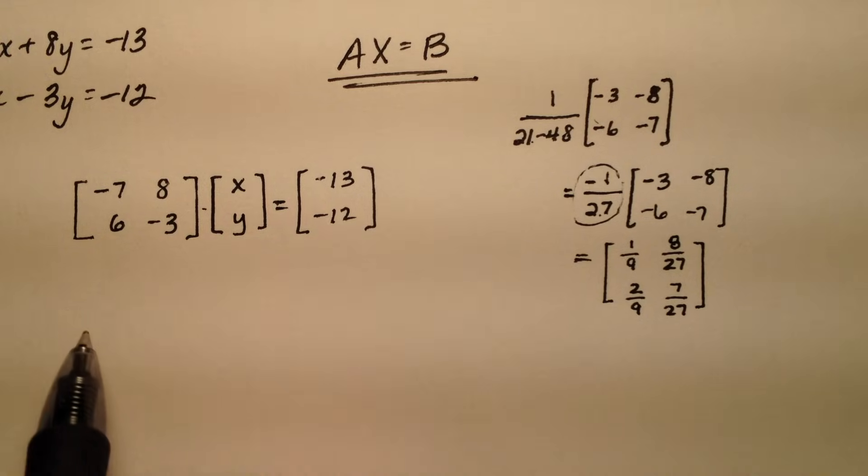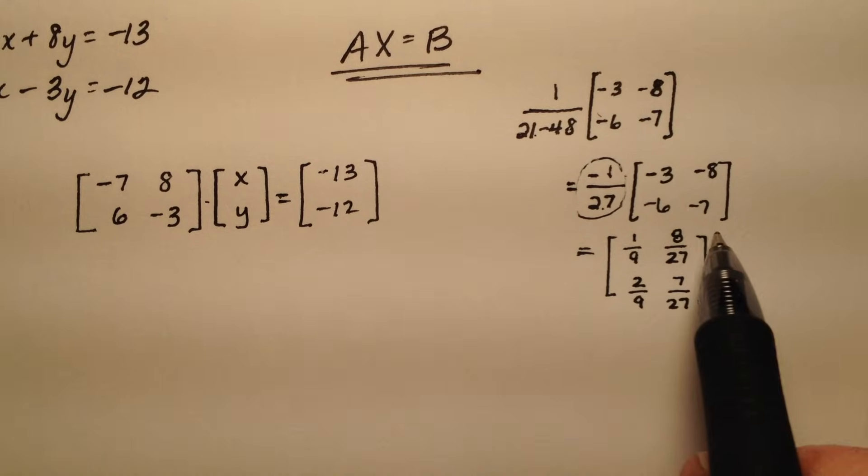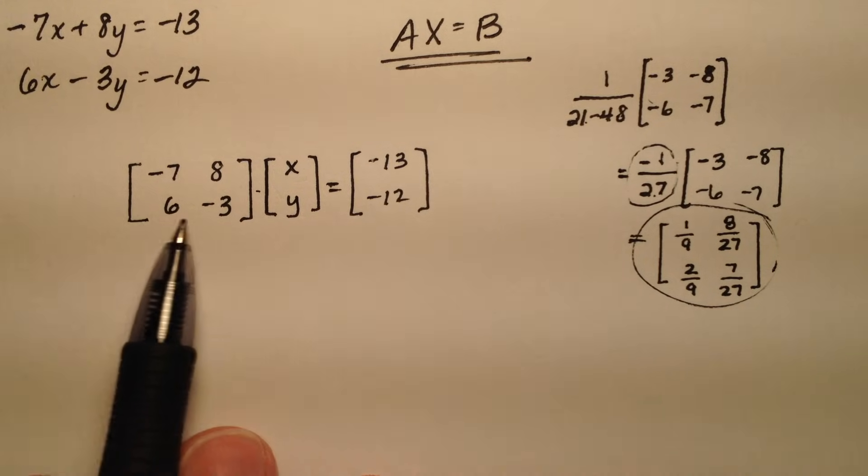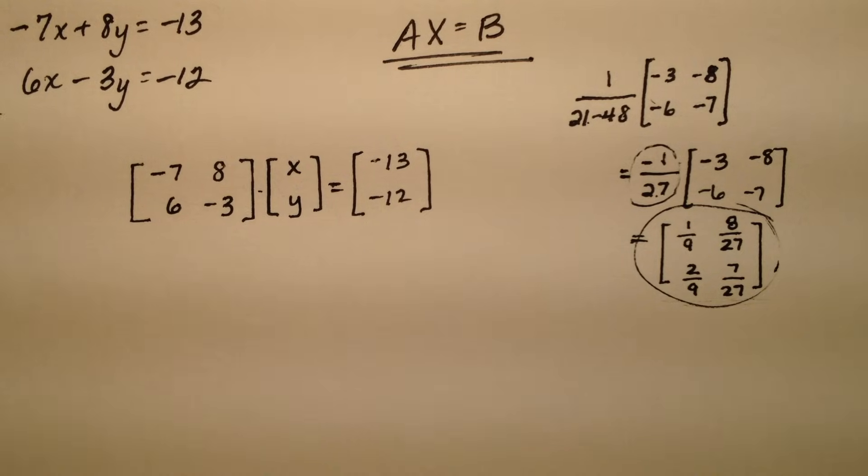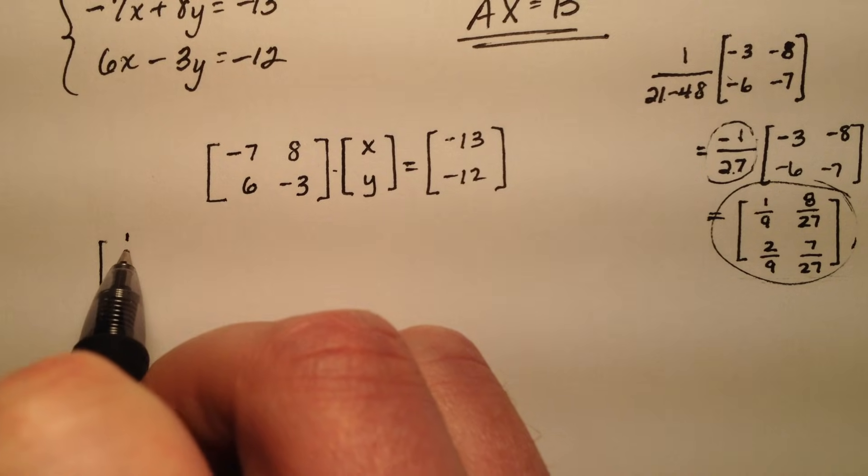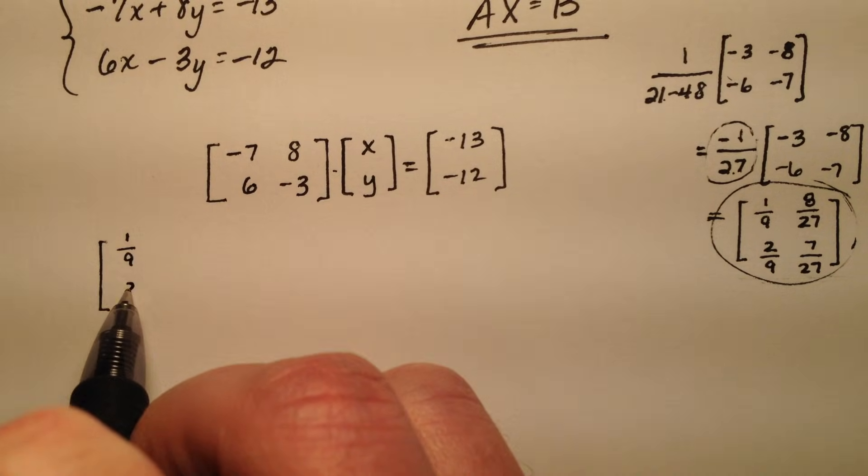Okay so what's happening now is I have this inverse matrix and I'm going to multiply each side of my equation on the left by this inverse matrix. So I'm just going to rewrite everything here. So 1 9th and 2 9ths, 8 27ths and 7 27ths.